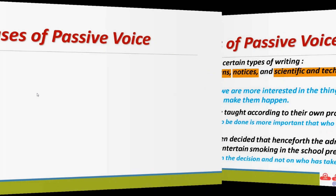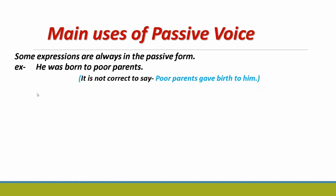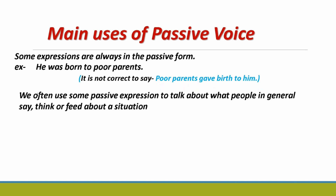Some expressions are always in the passive voice. For example: 'He was born to poor parents.' It would not be correct to say 'Poor parents gave birth to him.' We often use passive expressions to talk about what people in general say, think, or feel about a situation.